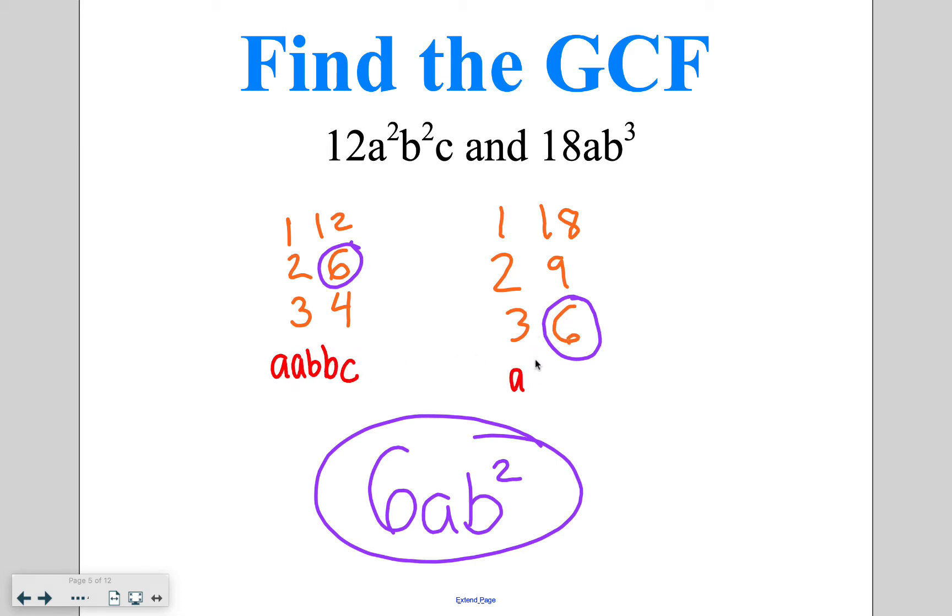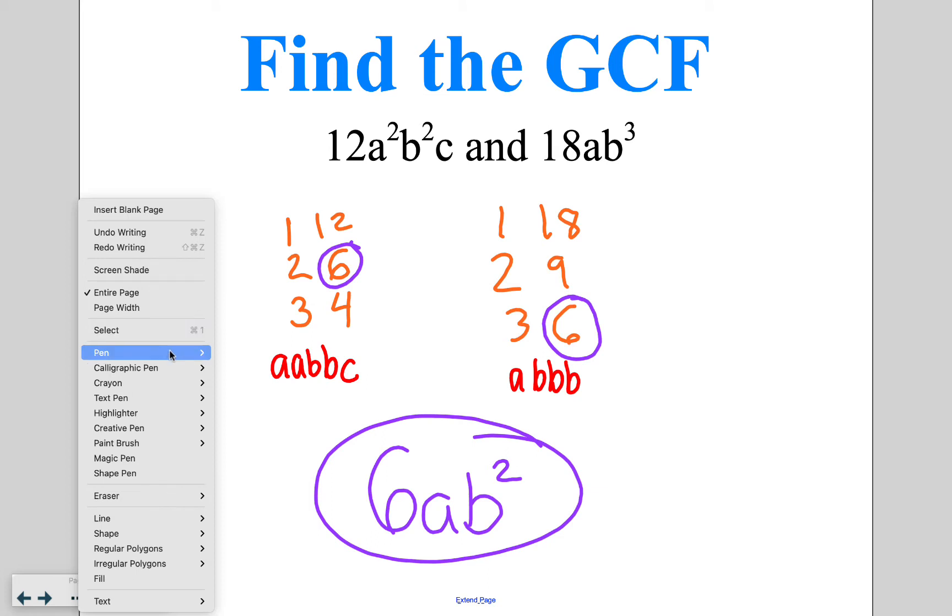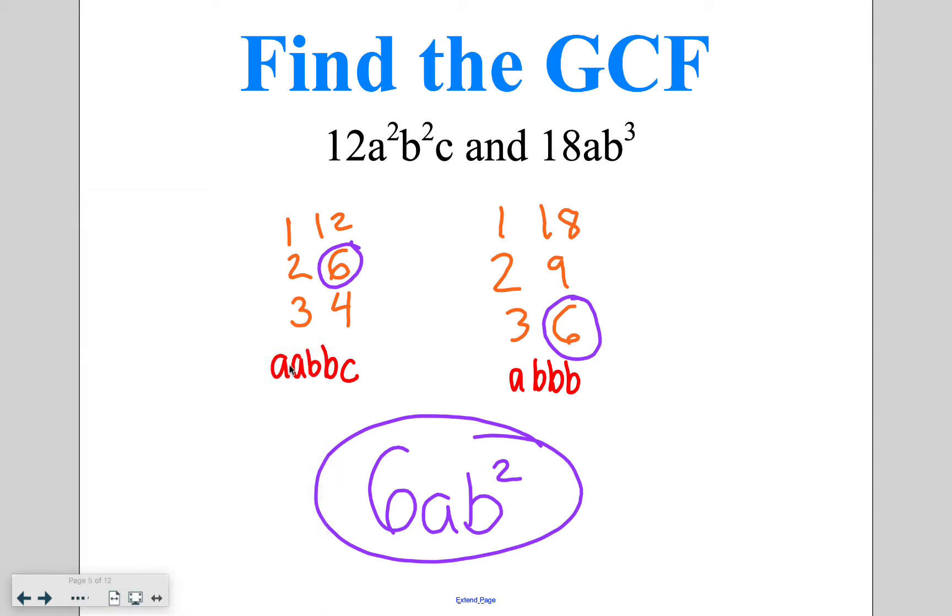And then in the second one, an a and 3 b's. And then when we are finding our greatest common factor, it is the biggest number, so 6. And then the variables that we have in common, so 1 a and 2 b's from each pair, giving us 6 a b to the 2nd.